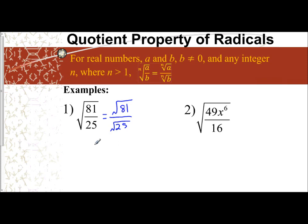The square root of 81 is 9. The square root of 25 is 5. So my answer is 9 fifths.